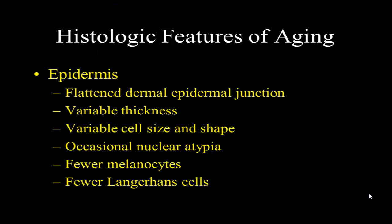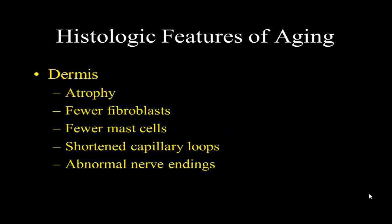So what happens with aging? The dermal papillae kind of flattens out, so there's less interface between the dermis and epidermis. The epidermis becomes variably thick. The cells get a little irregular, varying in size and shape. You may get a little nuclear atypia, fewer melanocytes — they can aggregate together into pigmented spots on the skin. There are also fewer Langerhans cells, which process antigens that come into the skin. The dermis gets thinner, there are fewer fibroblasts, fewer mast cells, capillary loops shorten, and nerve endings become abnormal.